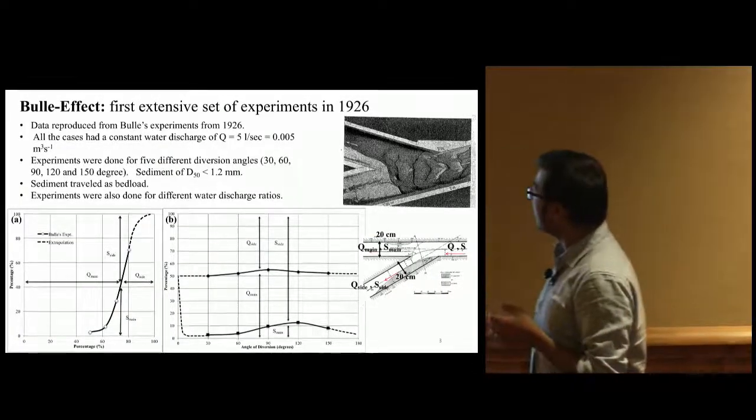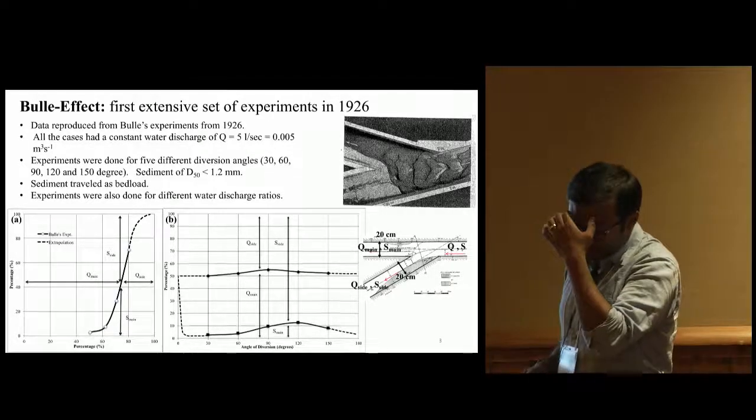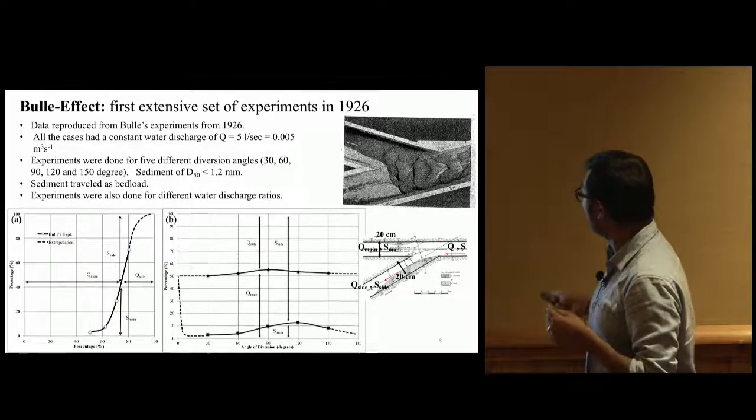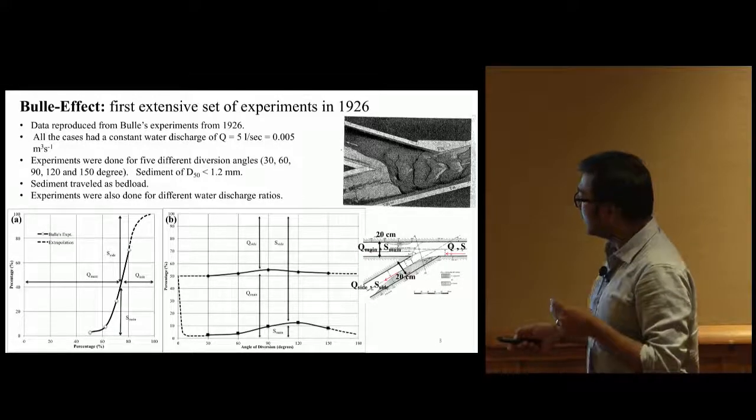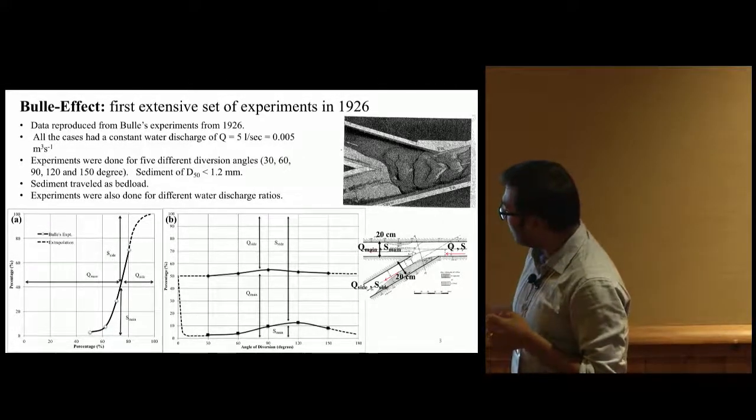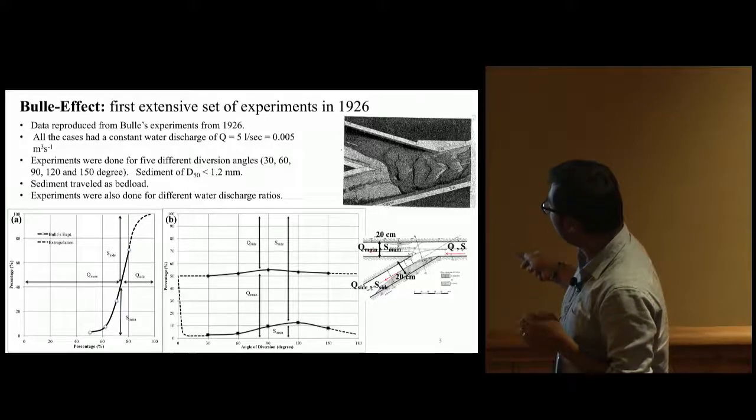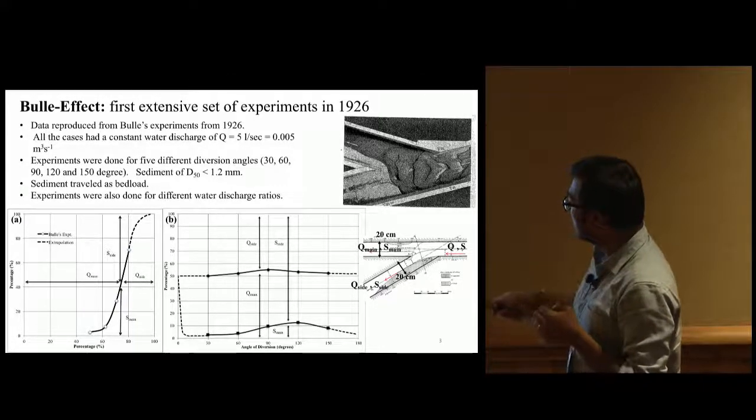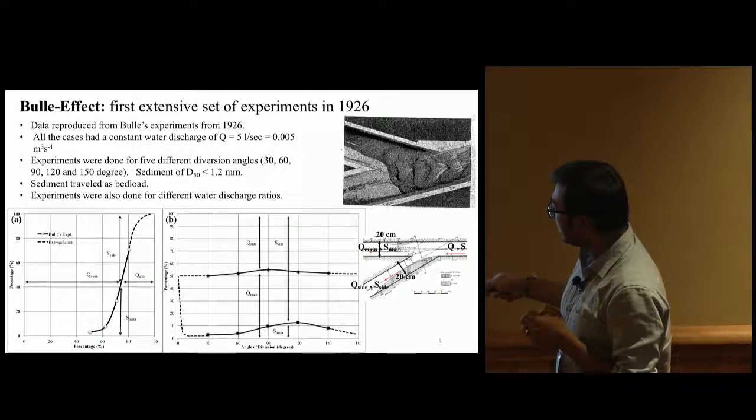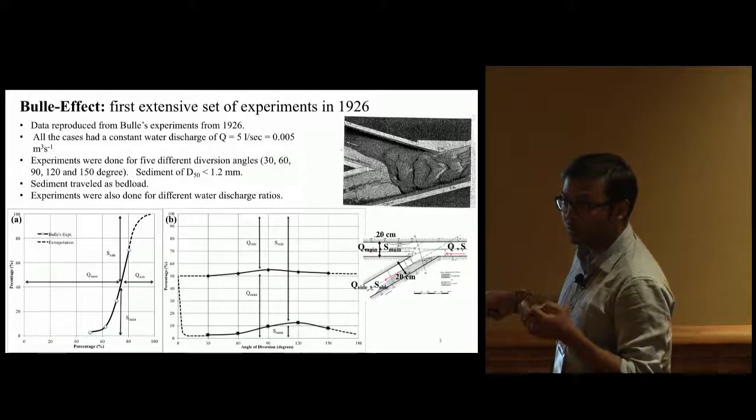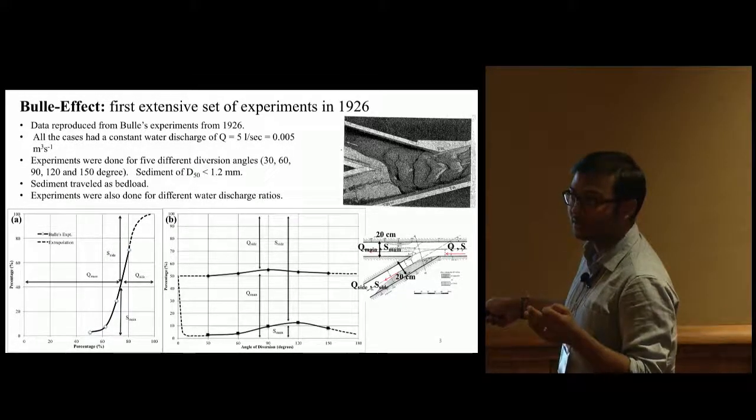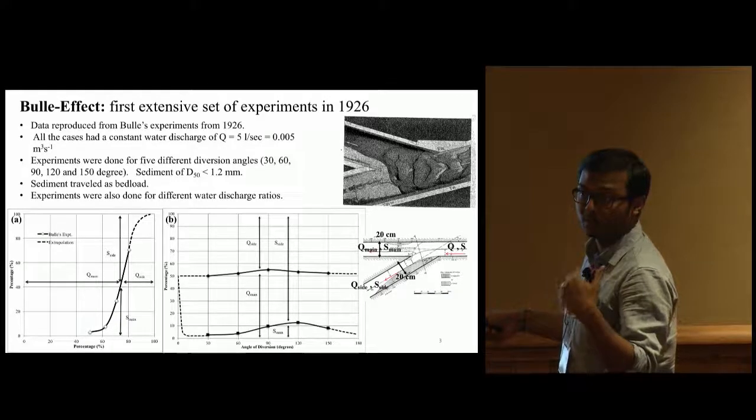Where does the name come from? One of the first experiments was done in 1926 on a 30 degree flume. They found that even though 50% or less of flow went into the side channel, almost 70 to 90% of bed load entered the side channel. This phenomenon was highly non-linear.